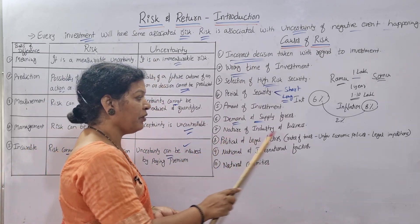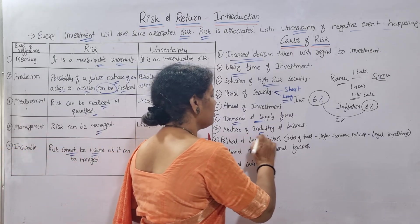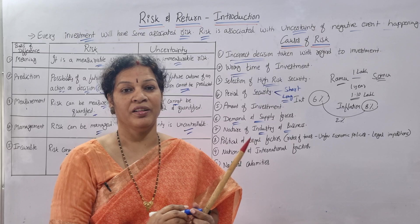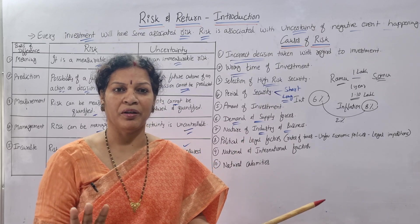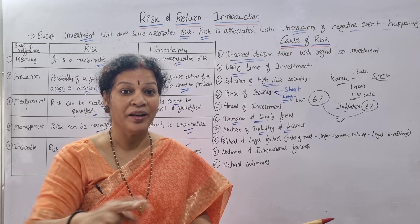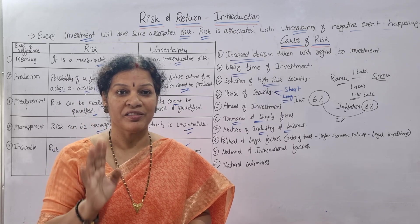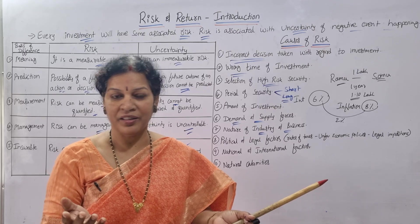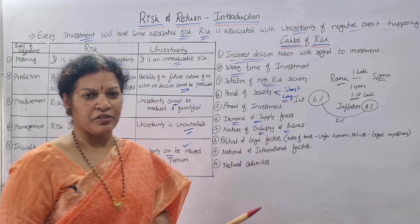Seventh cause: Nature of industry and business. What kind of business you choose and what industry it is matters. An evergreen business will have less risk. A new industry where you have no idea presents a possibility of risk — and if you go ahead despite limited knowledge, there is a chance of risk.